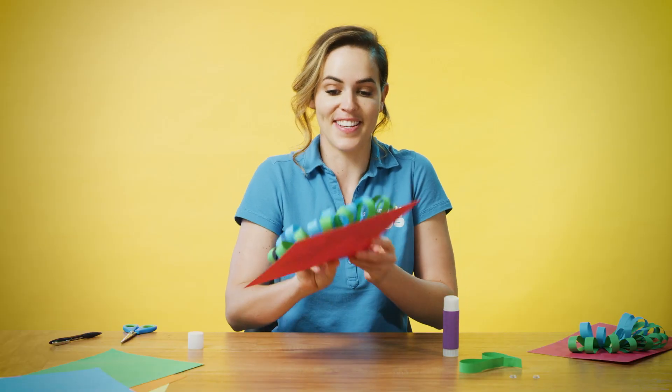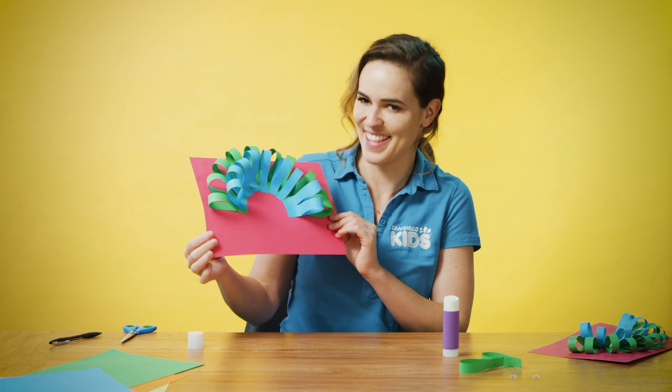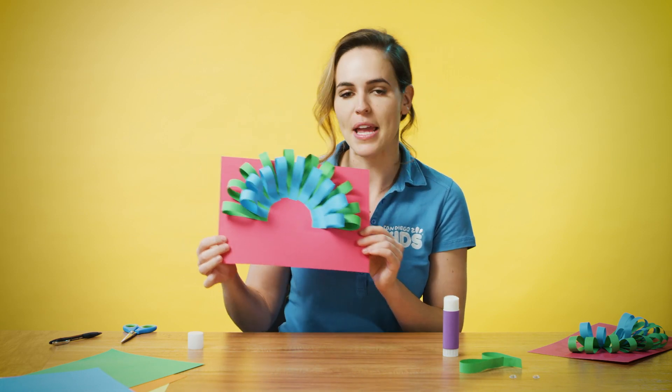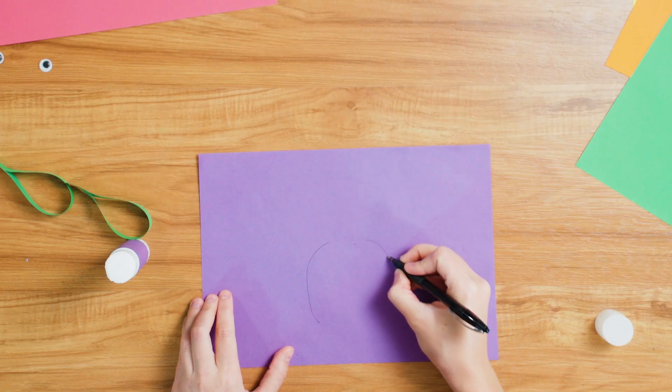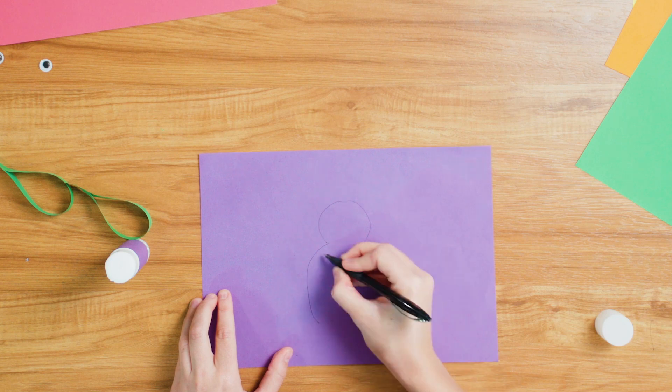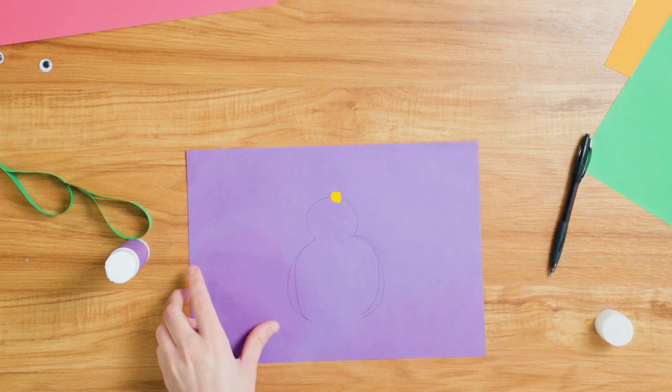Now all our feathers are looking excellent. The next step is to put our peacock's body in the middle, so grab whichever color cardboard you'd like to be the body. I'm going to use purple and draw out your peacock's body to match this shape.